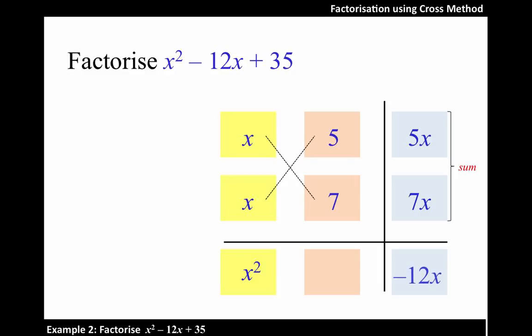So to get -12x, it means 5x and 7x should be negative, so that when we sum them up, we would get -12x.